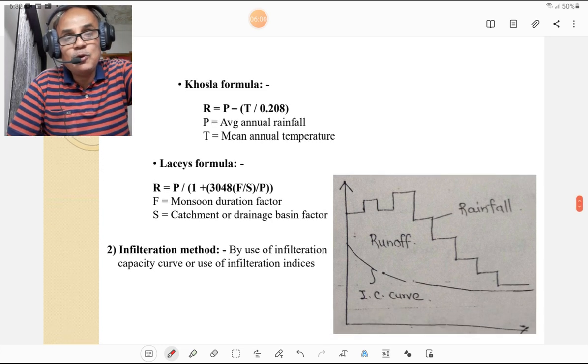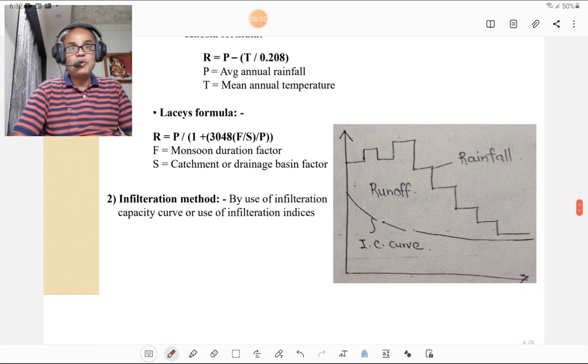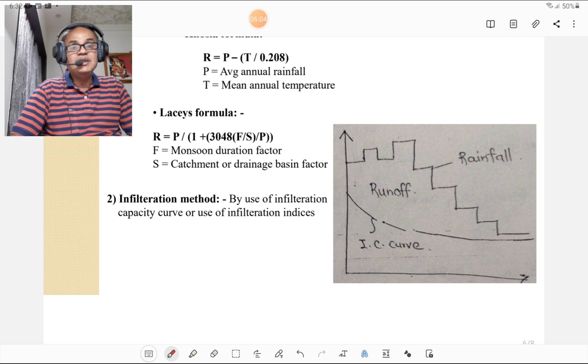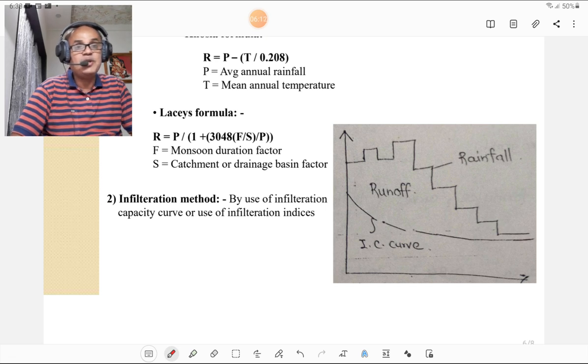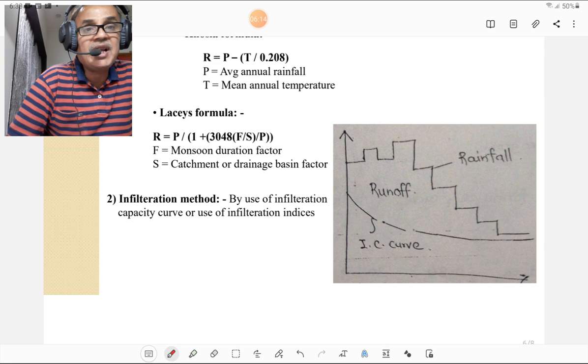Then Lacey's formula is also used to determine the runoff. R equals P divided by (1 plus (3048 times (f divided by s)) divided by P), where f equals monsoon duration factor and s is the catchment or drainage basin factor. And this Lacey's formula is used to determine the runoff also.